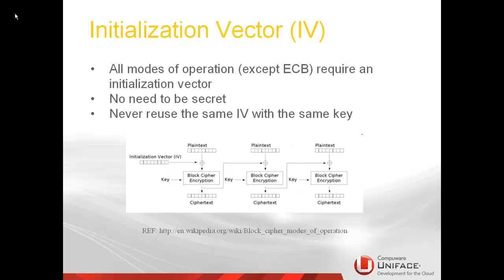If you use modes of operation except ECB, you need to provide an IV. The IV does not need to be secret, but the key needs to be secret, of course. IV stands for Initialization Vector. Don't reuse the same IV with the same key. The reason is that if you encrypt many different files using the same IV and key, it is possible for someone to infer what key was used. So you can create an IV using a random scheme or a timestamp, and store it together with the encrypted data so it's available during decryption.